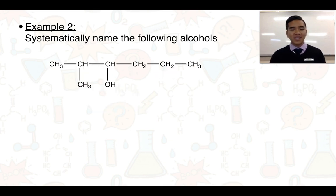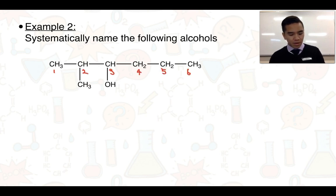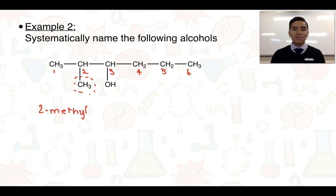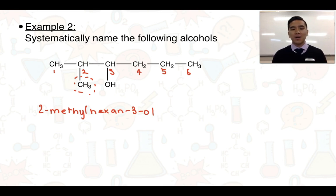Our next example has a different carbon chain — one, two, three, four, five, six carbon atoms in the longest chain. We have a methyl group on one carbon and a hydroxyl group on another. We number from left to right to give the –OH group the lowest possible number. From our previous videos, you'd name any substituents first, so we indicate where the methyl group is, then finish the name: six carbons makes it a hexanol — specifically a hexan-3-ol. Alternatively this could be named 2-methyl-3-hexanol.